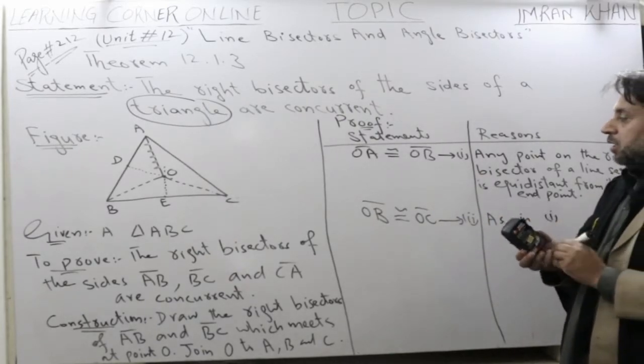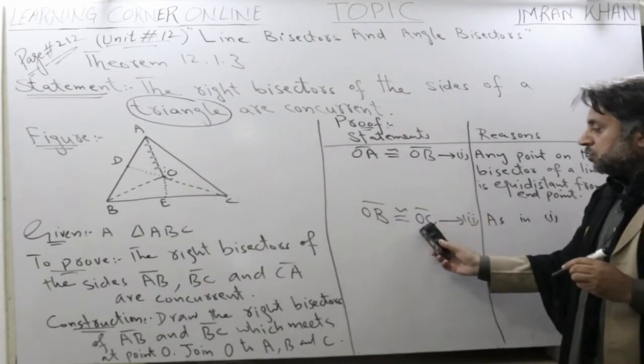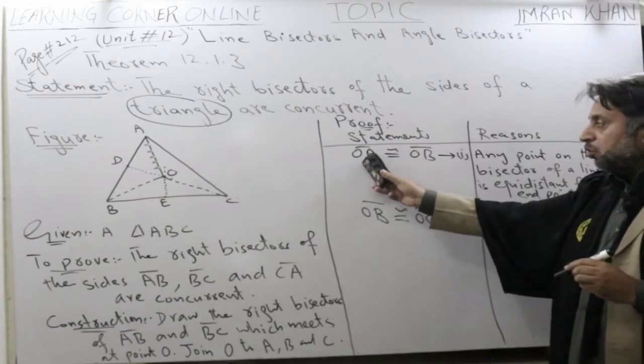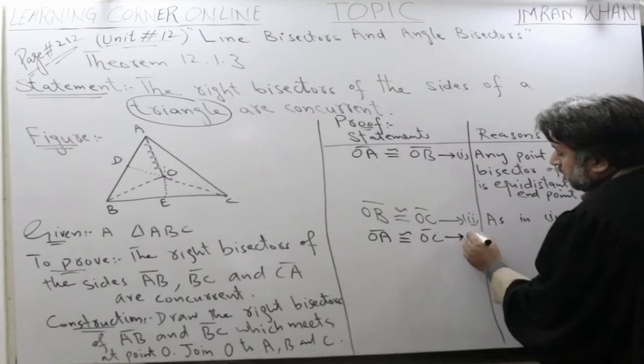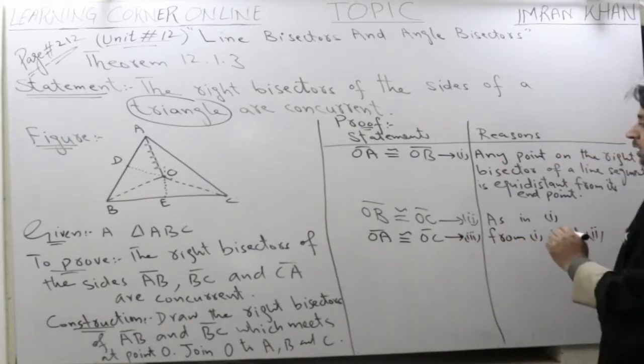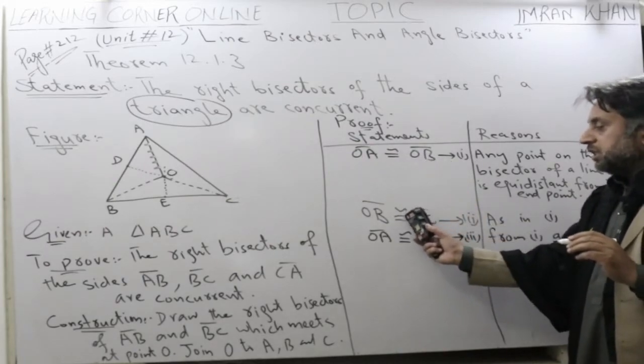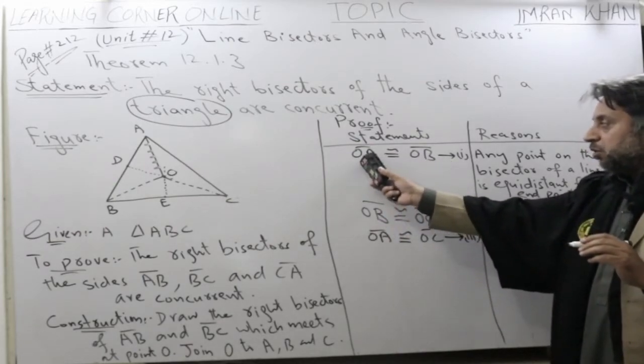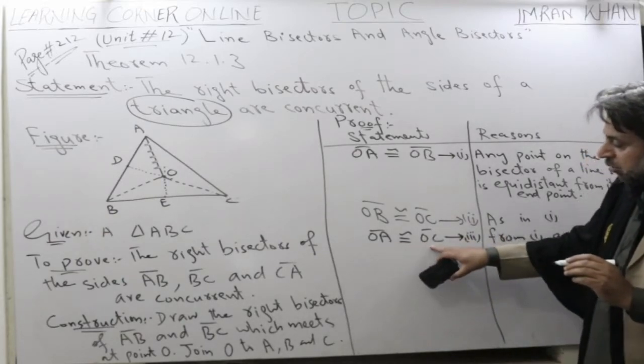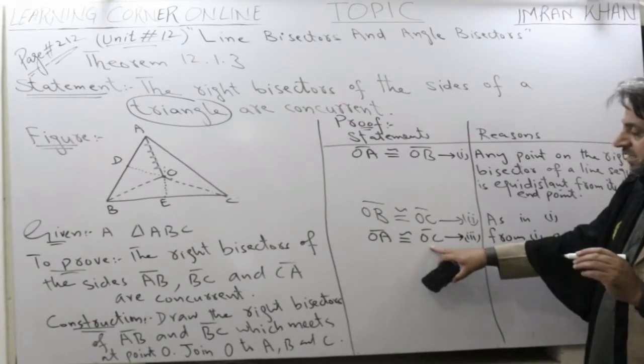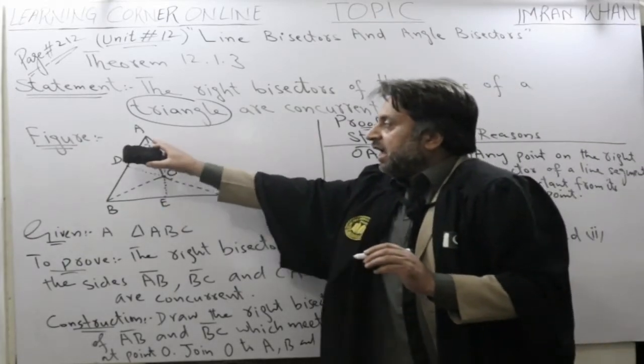Now, when OA is congruent to OB and OB is congruent to OC, it means that OA is congruent to OC. When OA is congruent to OC, it means that O is equal distance from A and C.